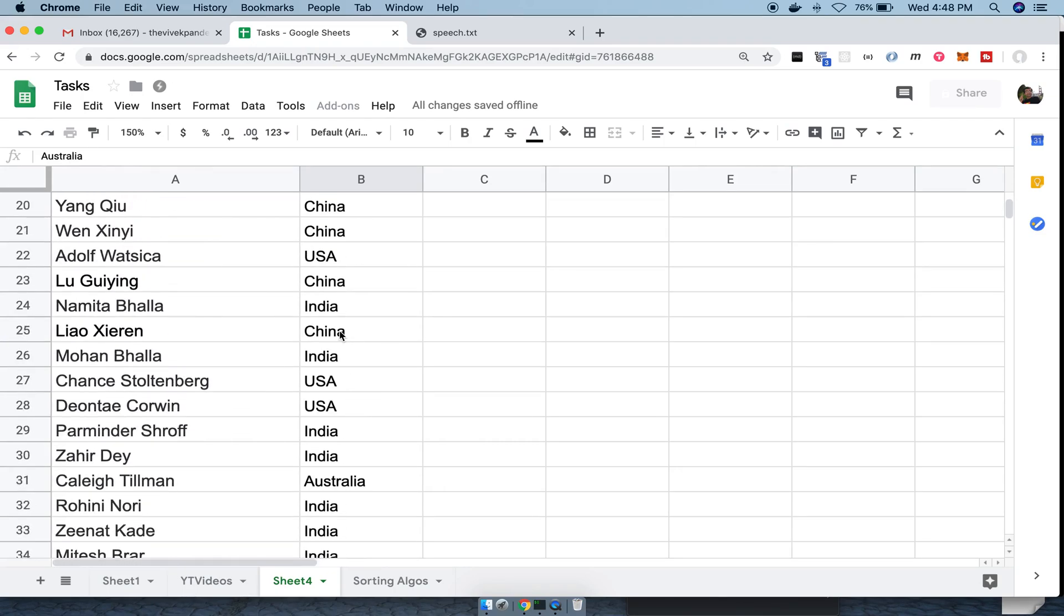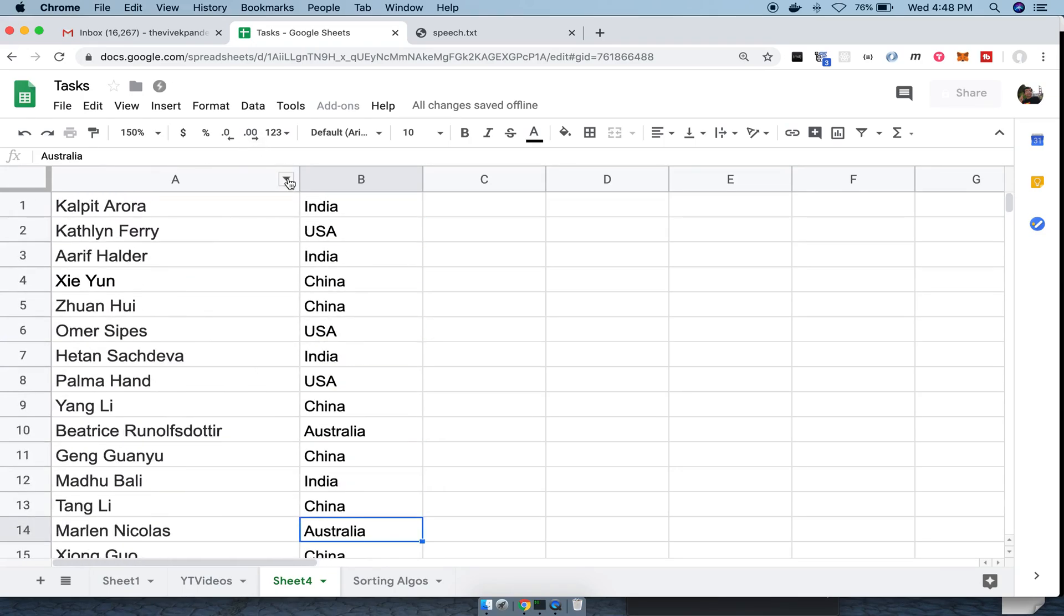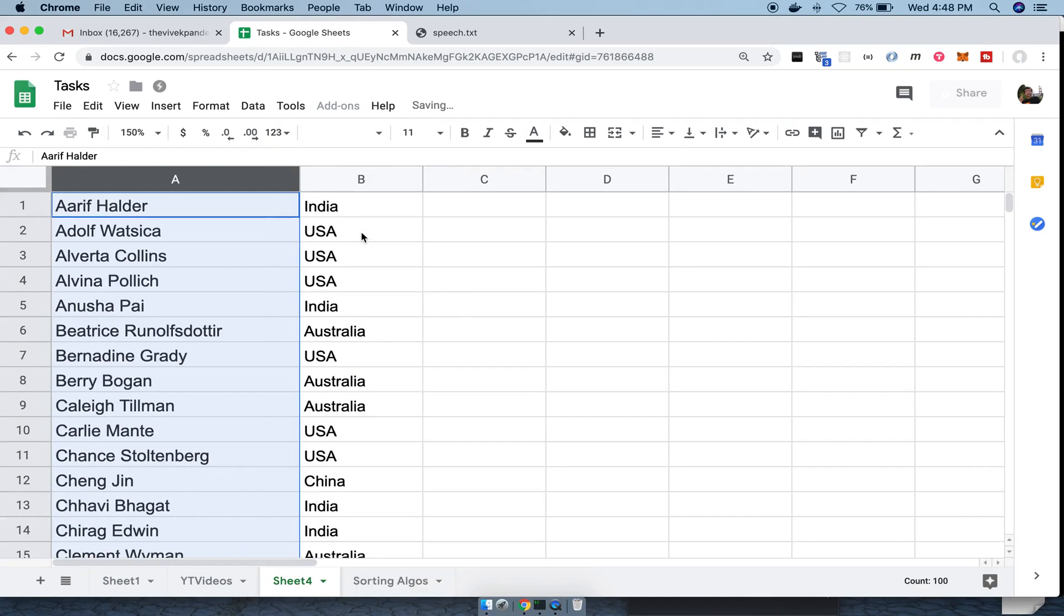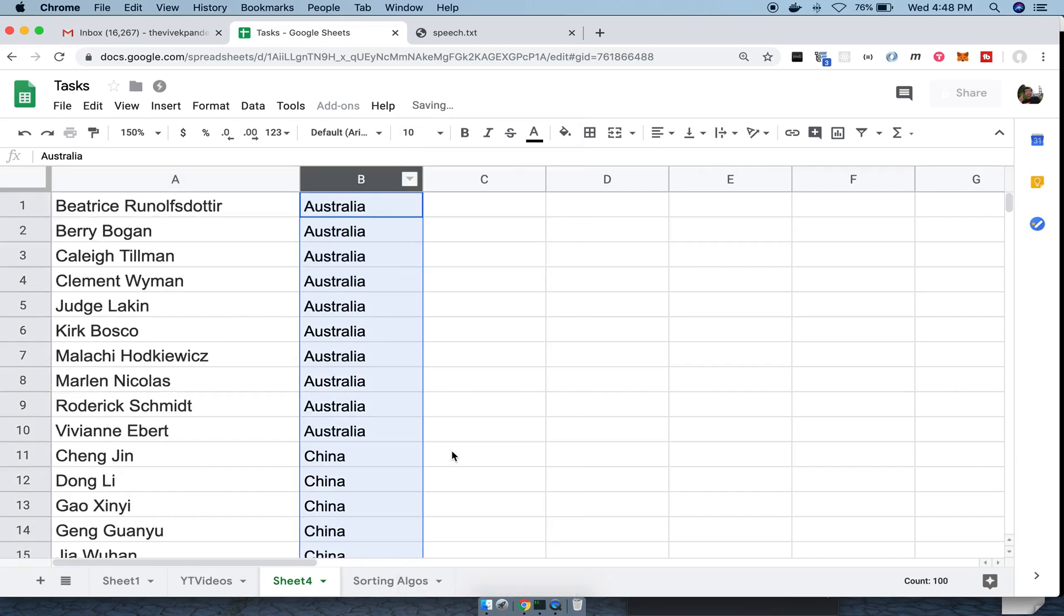Let's say a user first decides to sort the list in the order of the names. Next for some reason he decides to order the list in the order of the countries. Indeed now we have the list sorted as per the country names. But notice an interesting thing.